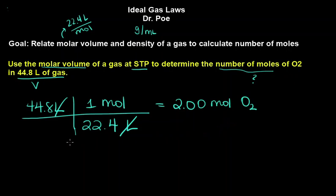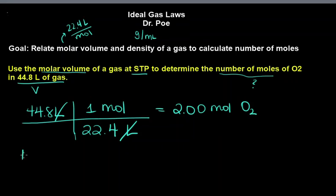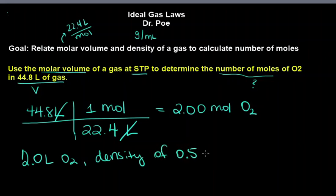So we could determine the molecular mass if we were given a density and a volume. So for example, maybe we're given 2.0 liters of O2, density of 0.5, we're going to say grams per liter. At STP, find the molar mass.